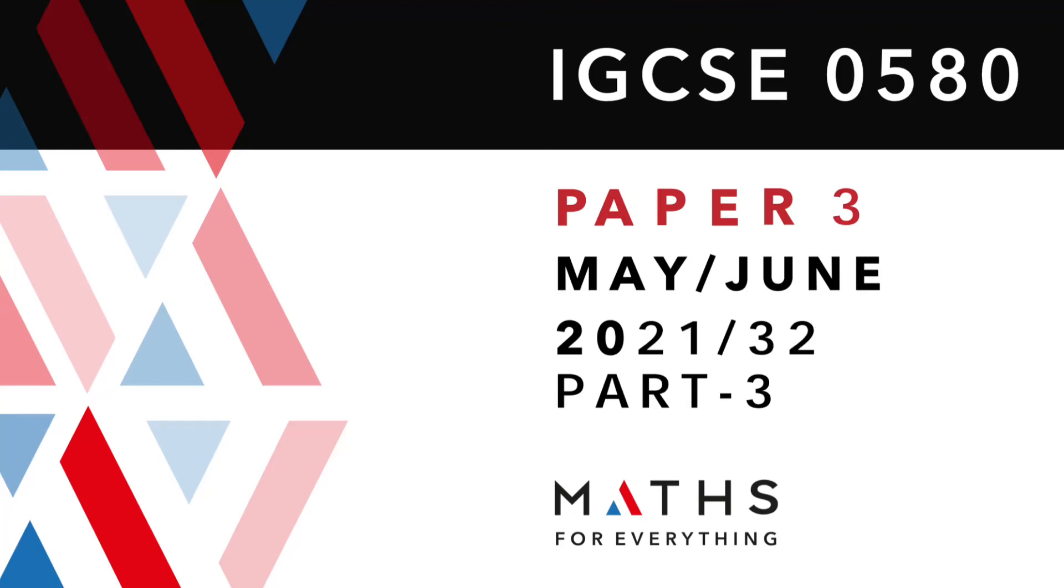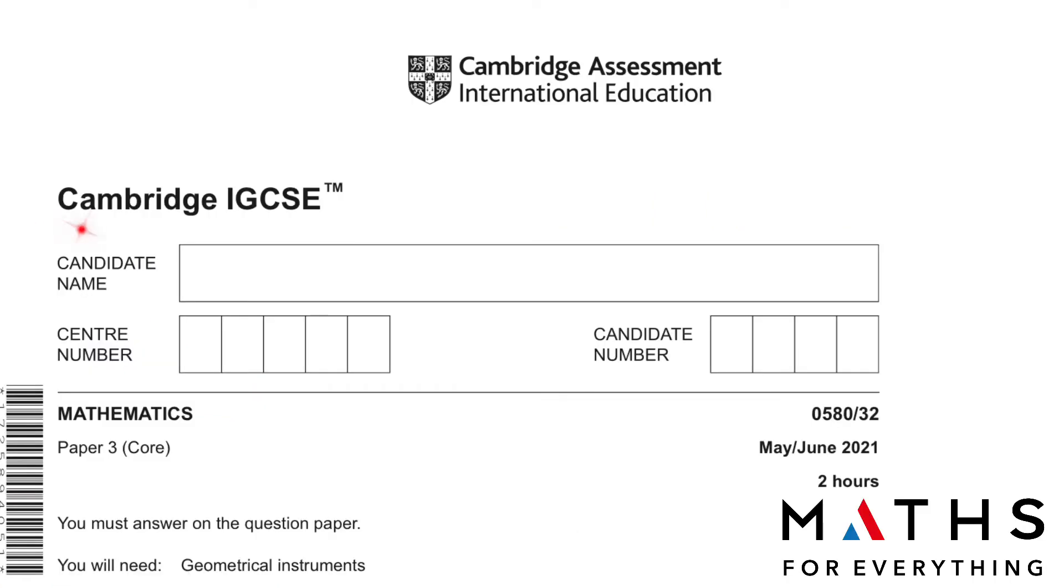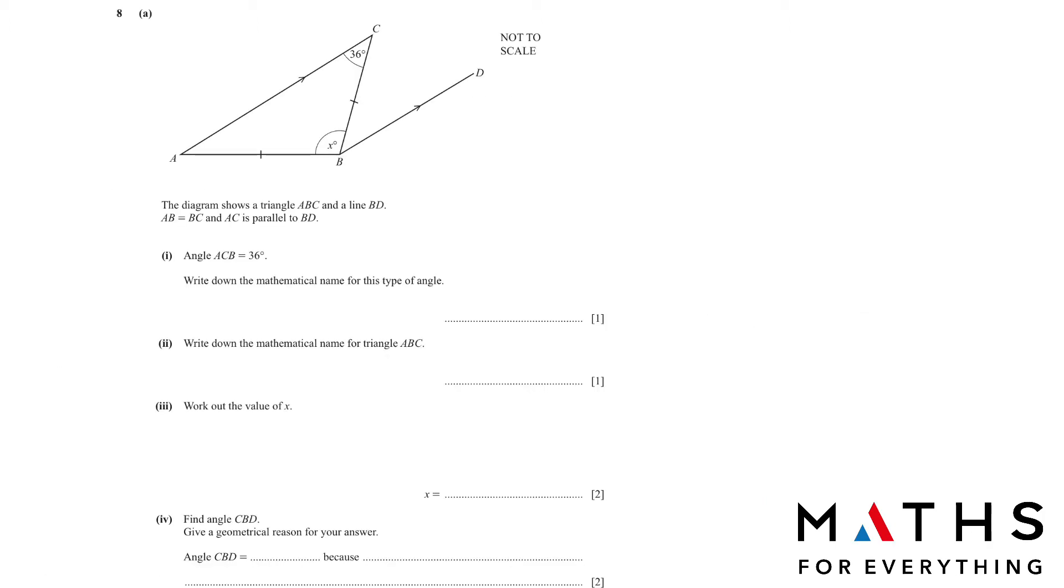Assalamu alaikum, welcome to my channel. In this video we are going to solve Cambridge IGCSE mathematics paper 3 core, variant 3-2, May-June 2021 from question number 8 onwards. Before we begin, do subscribe to my channel, like the video, share it with your friends. Let's start.